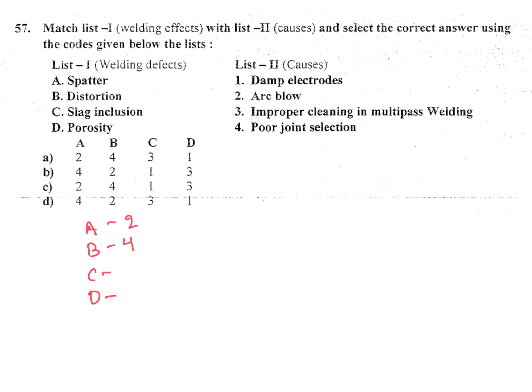For C slag inclusion, improper cleaning and multipass, if slag will remain before that welding, slag inclusion that defect will come, so C is 3.